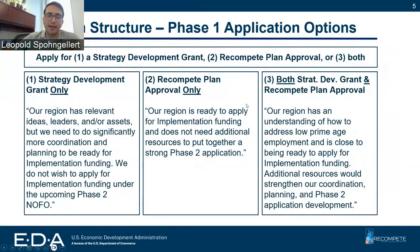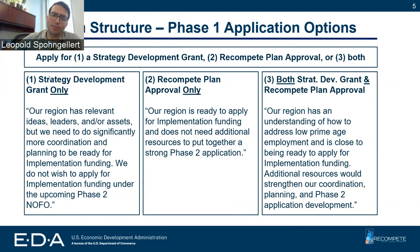Here are some guidelines for those of you still thinking through which to apply to. For those who might consider a strategy development grant, you might say to yourself: our region has relevant ideas, leaders, and assets, but we need to do significantly more coordination and planning to be ready for implementation funding. We do not wish to apply for implementation funding under the upcoming NOFO. This is for those who only want a strategy development grant and do not want to be eligible for Phase 2 at this time.